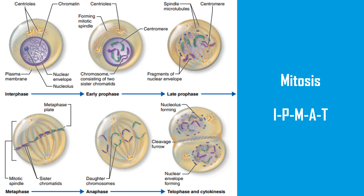Mitosis has five different phases: interphase; prophase, which is divided into two stages — early prophase and late prophase; then metaphase, anaphase, and telophase. And at the end, the division of cytoplasm is known as cytokinesis.